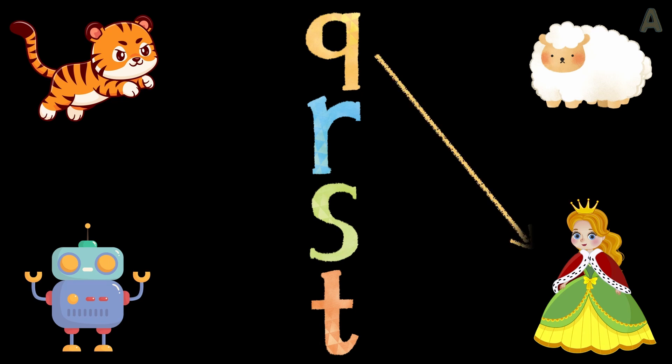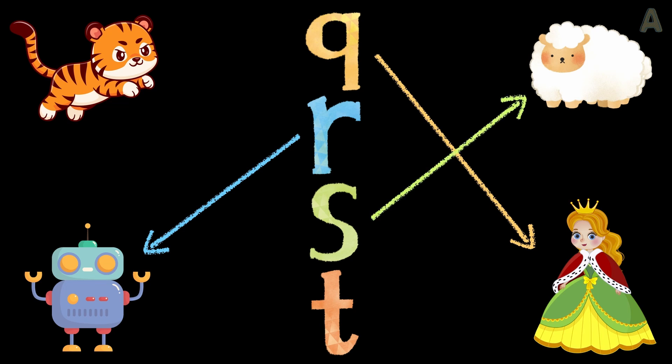Q for queen. R for robot. S for sheep. T for tiger.